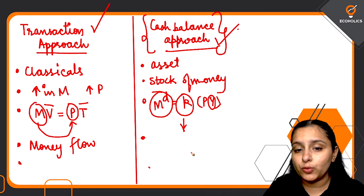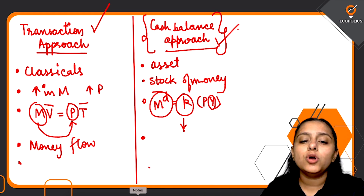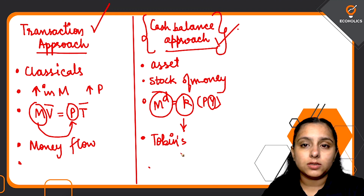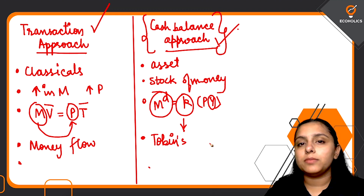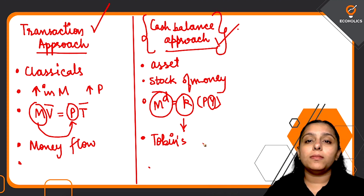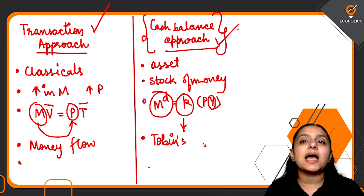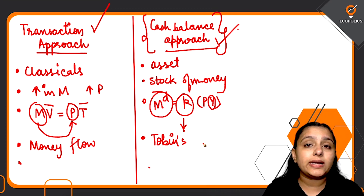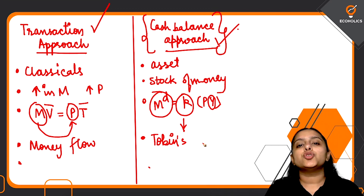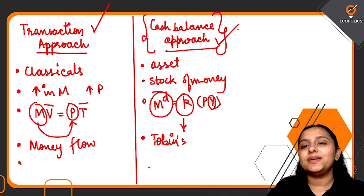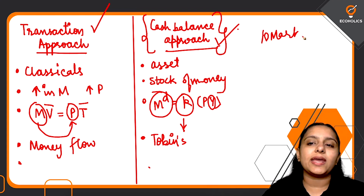Under the cash balance approach, you can also mention Tobin's portfolio approach to demand for money, where he said that people hold a portfolio of money and assets, treating money as an asset. Similarly, in Baumol's theory, money is treated as an asset and kept in inventory. You can mention these theories while writing about the cash balance approach, but remember it is just a 10-mark question, so do not exceed the word limit.